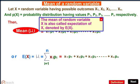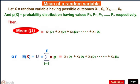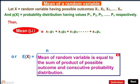The mean of a random variable x is also called the expectation of x and is denoted by E(x). The mean of a random variable is equal to the sum of the products of possible outcomes and their corresponding probability distribution values.